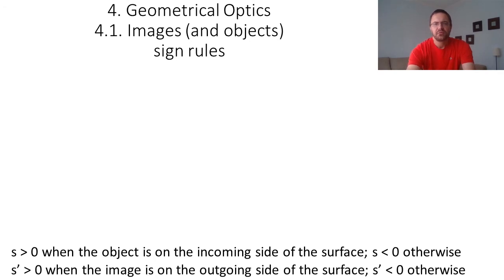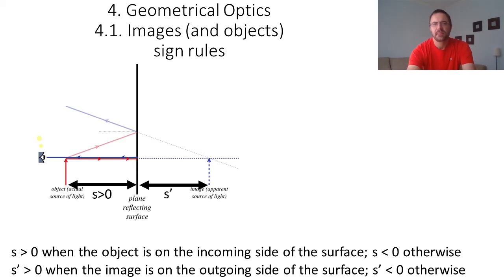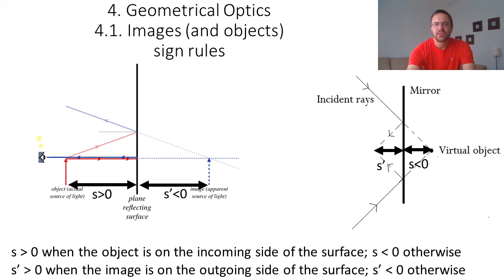The second sign rule is for the position of the image, labeled s prime. s prime is positive when the image is on the outgoing side of the surface, and negative otherwise. In one situation the image is on the right but the outgoing side of the mirror surface is on the left, so s prime is negative. In another situation the image is on the left and the outgoing side of the mirror surface is also on the left, so s prime is positive.